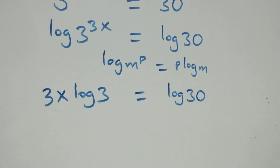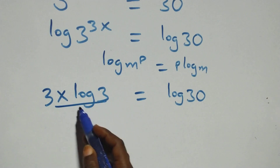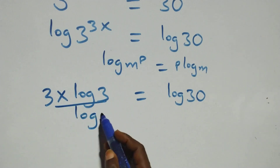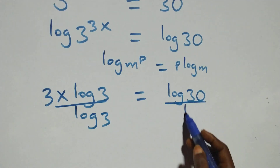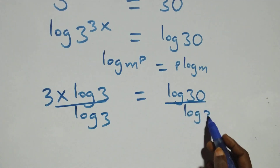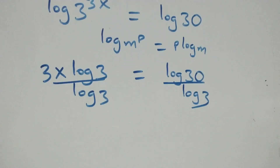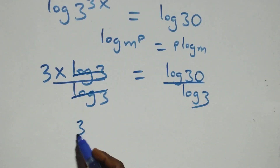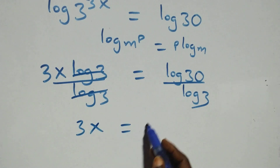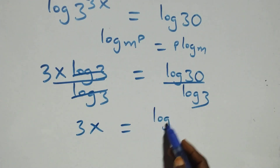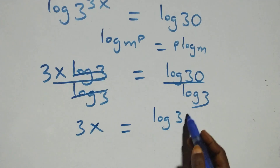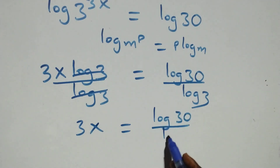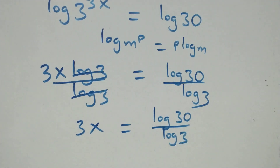Then here we divide both sides by log 3. The log 3 terms cancel each other, and we have 3x equals log 30 over log 3.